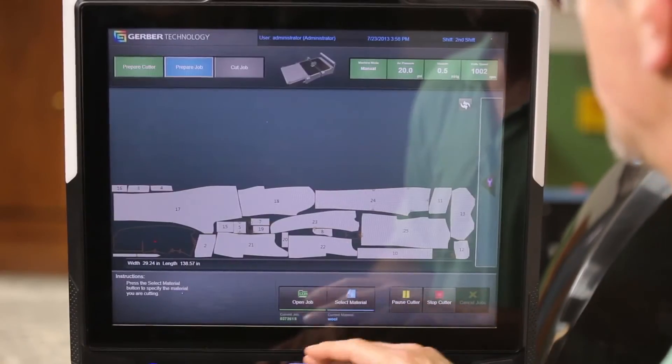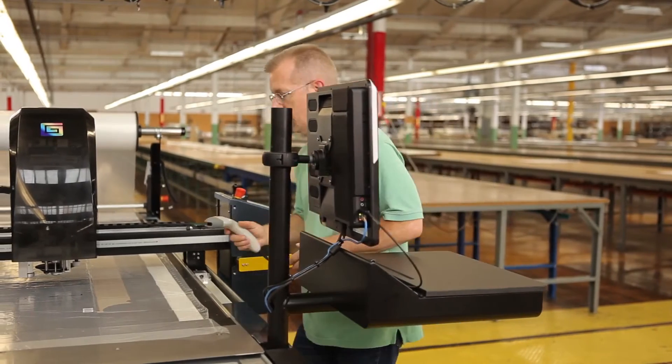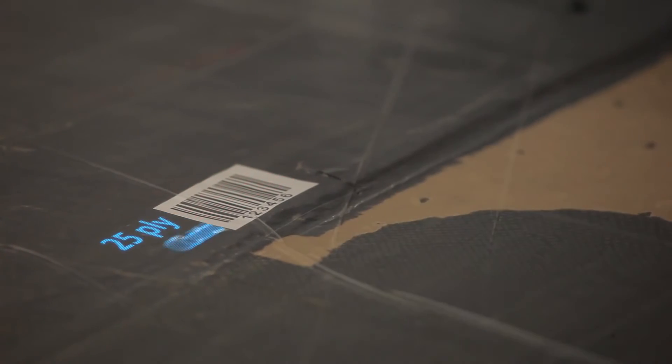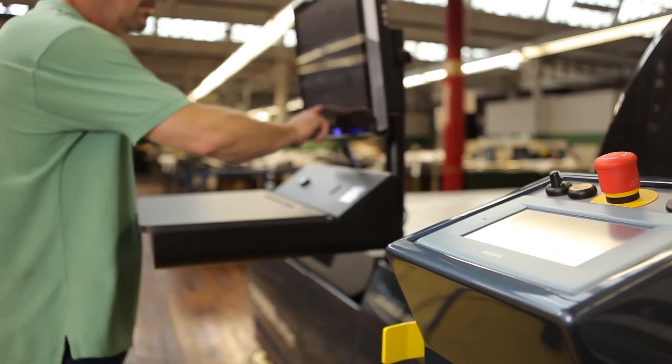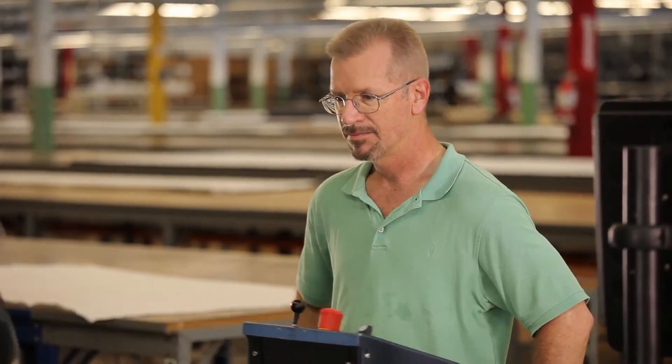Downstream, spreader and cutter operators scan a barcode to retrieve the job-specific parameters. There's no need to search for a file and manually enter details like ply count and material type. This improves throughput, minimizes errors, and enables managers to track work in progress with confidence.